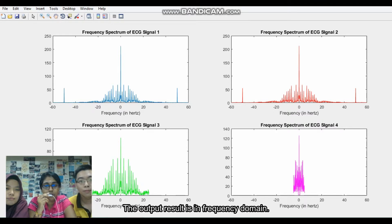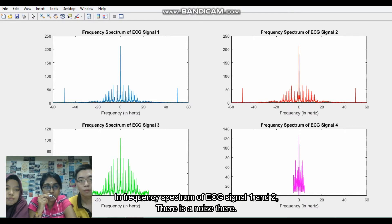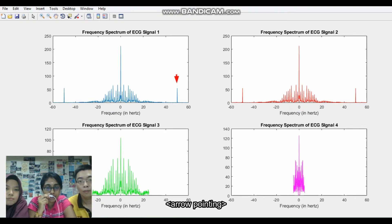The output result is in frequency domain. We have four ECG signals frequency spectrum. We can actually observe that frequency spectrum for ECG signal 1 and ECG signal 2, there is a noise there, the blue color line.